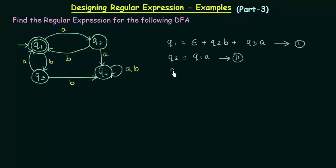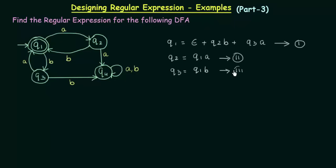Now let's do the same thing for Q3. For Q3 also we see that there is only one incoming transition, that is from Q1 to Q3 with input B. Since it is coming from Q1, I will write Q1 and input is B. Let me call this equation number 3.